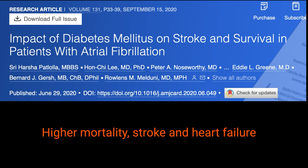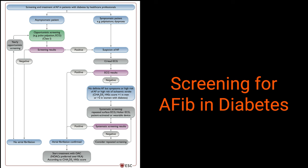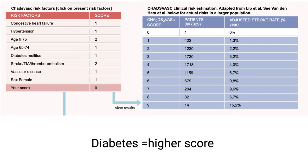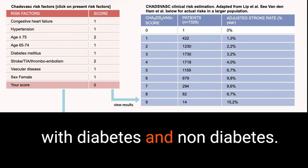Comorbidities like hypertension and obesity worsen the prognosis further. Intensive glucose lowering to an A1C target less than 6% resulted in similar atrial fibrillation rates compared to more lenient control with A1C less than 8%. Since asymptomatic silent atrial fibrillation is not uncommon, patients with diabetes should be opportunistically screened for atrial fibrillation by palpating the pulse or by doing an ECG. Diabetes gets one point in the CHA2DS2-VASc score, and patients with diabetes usually have a higher score because of common comorbidities like hypertension, age, and vascular disease. The management of atrial fibrillation is the same in patients with diabetes and non-diabetes.